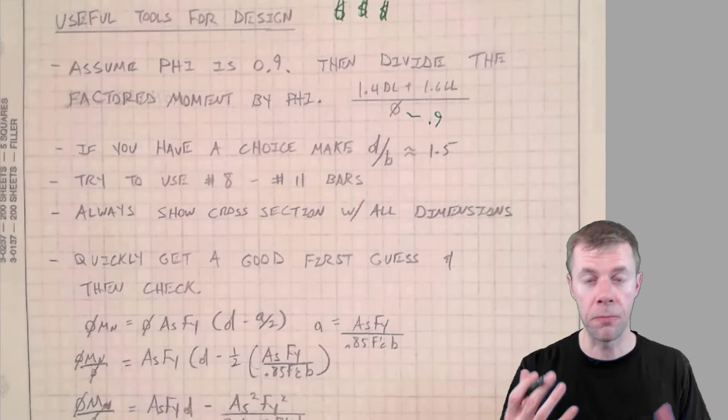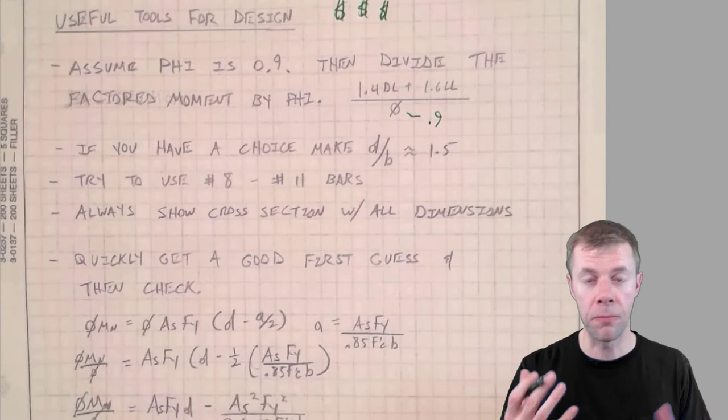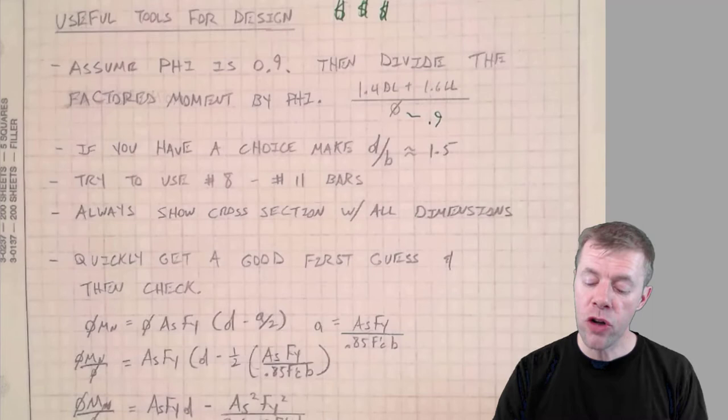If you have no choice, if you get to pick your own, then you should make your D over B ratio... what's the D? That is from the fiber in compression to the centroid of the steel—that's your D.